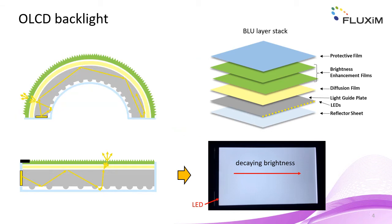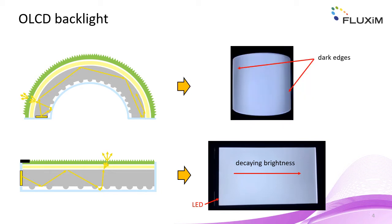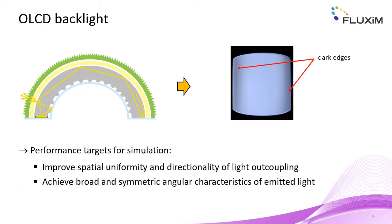In the case of a strongly curved backlight unit, on the other hand, the internal angular distribution of the light in the light guide as well as the directional characteristics of the light outcoupling are drastically altered. Most importantly, there is the tendency for light to be emitted sidewards, which leads to the appearance of dark edges. In addition to the uniformity of the spatial intensity distribution and of the angular characteristics, there is therefore also the aspect of directionality of the light outcoupling to be considered as a simulation target.